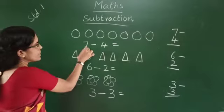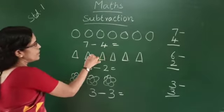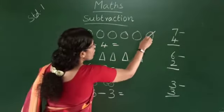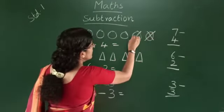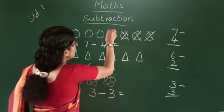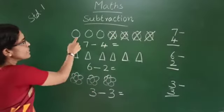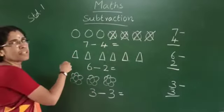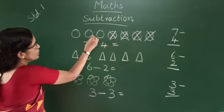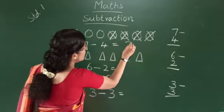Then we say 7 minus 4. We cross out 4 circles: 1, 2, 3, 4. How many circles are remaining? 1, 2, 3. 7 minus 4 is equal to 3.